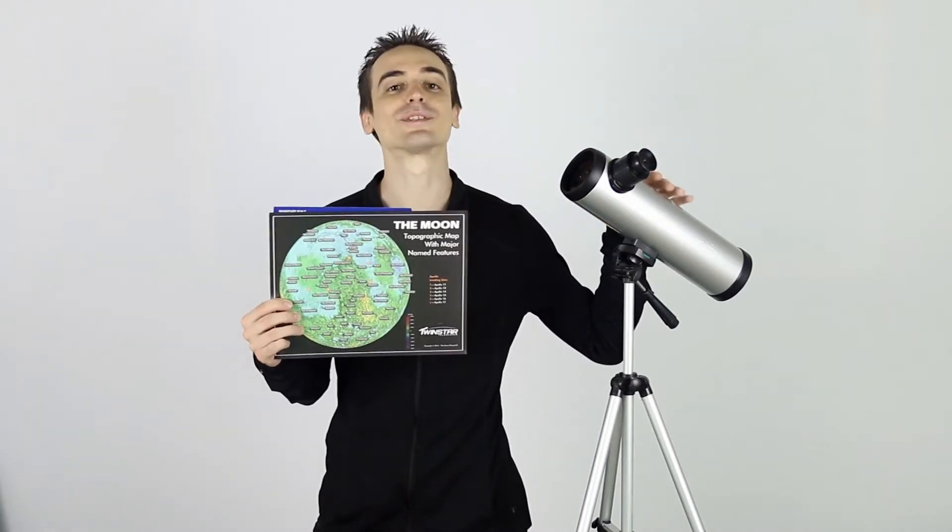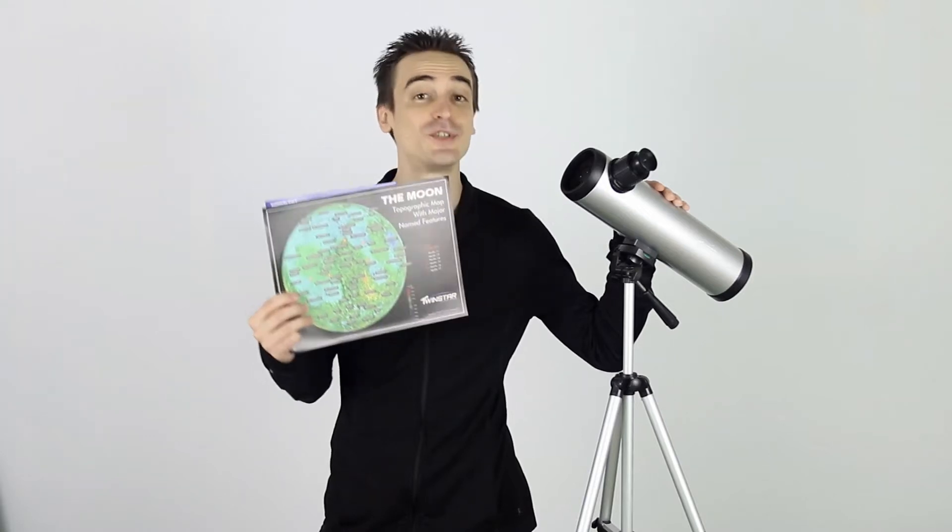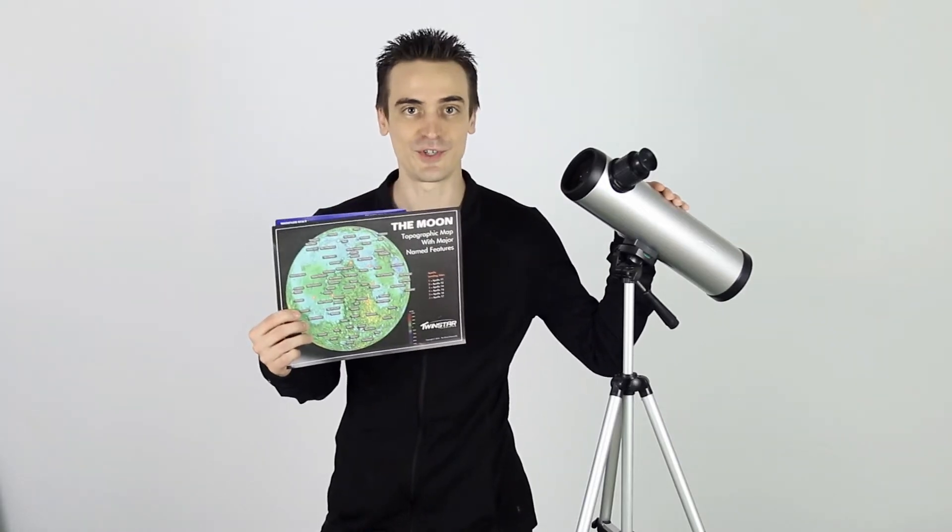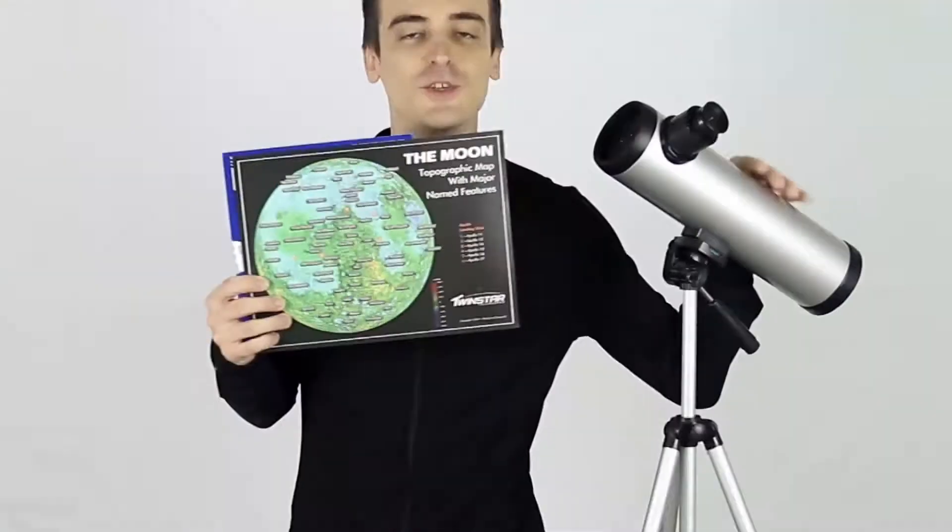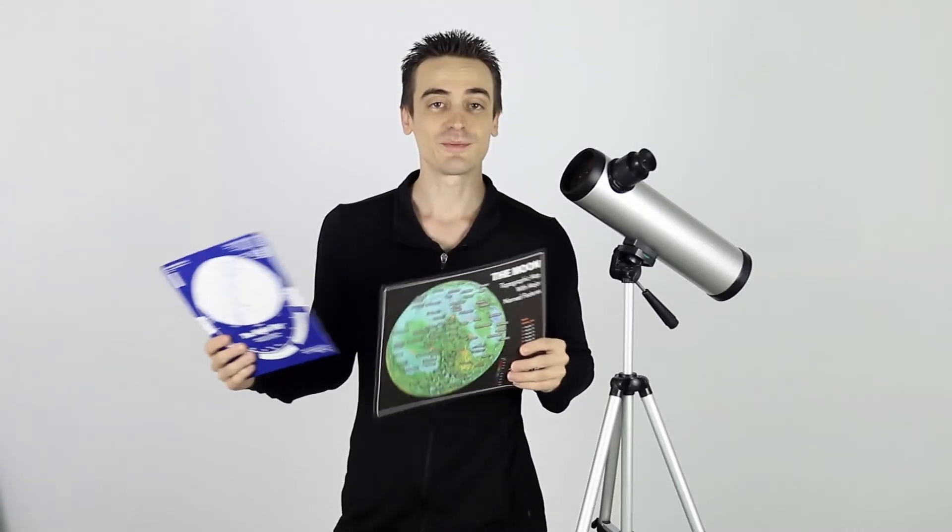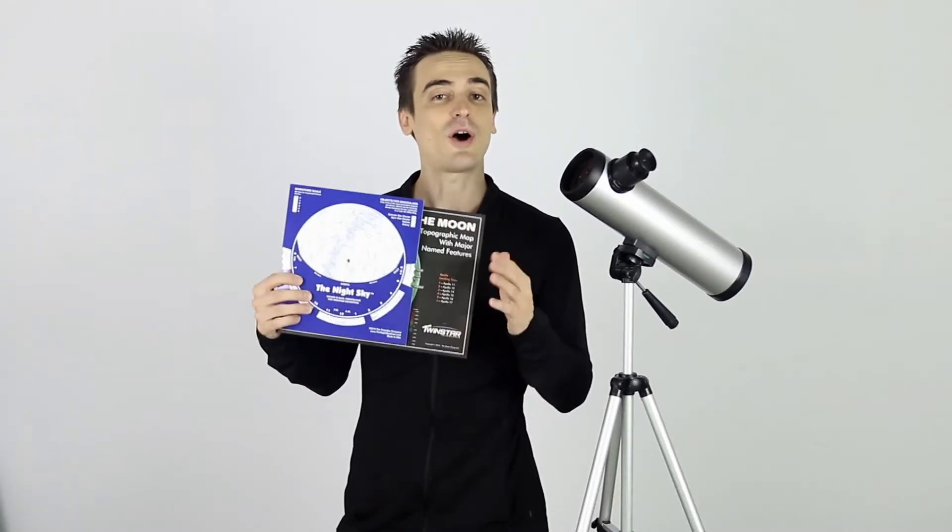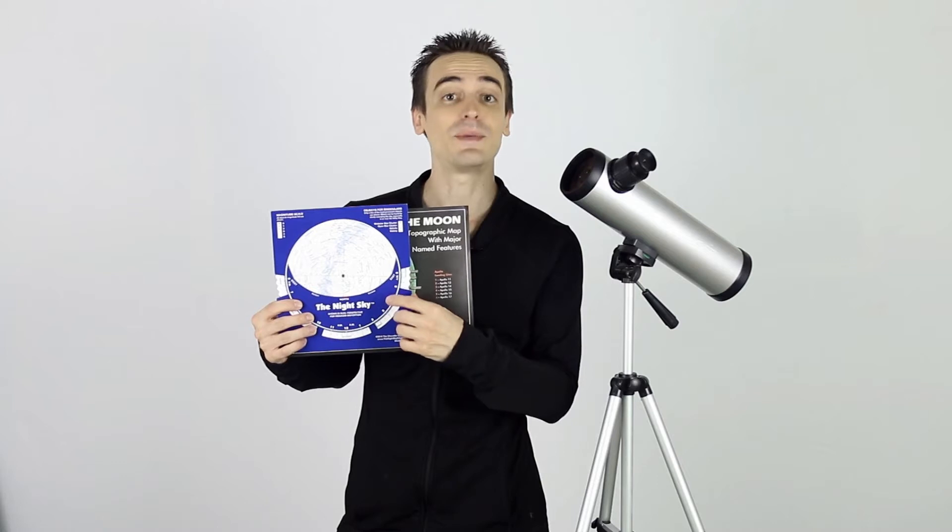And with this telescope you'll be able to see the rings of Saturn, the moons of Jupiter, and even the cloud belts on Jupiter in good viewing conditions. You'll be able to view binary star systems like the one on the Big Dipper, and you can also observe star clusters like the Beehive Cluster.